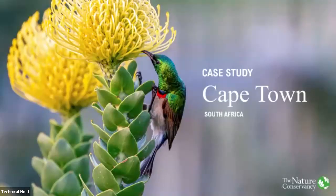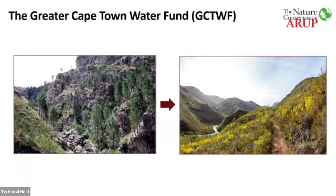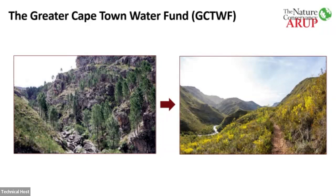Our first case study is Cape Town, which as you all know went through a massive three-year drought — which unfortunately is probably now the standard of living in Cape Town. The catchment looks like the picture on the left — lots of trees — but it should look like the catchment on the right: native fynbos habitat that is local to the region and can't be found anywhere else in the world. The Nature Conservancy works with a lot of partners, including the government of Cape Town, to cut down invasive trees. These are invasive pines and they're also very thirsty trees, so clearing the catchment of invasives would release the equivalent of about three months of water supply for the city of Cape Town.